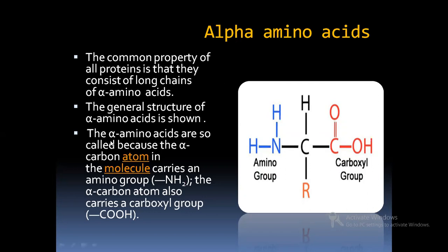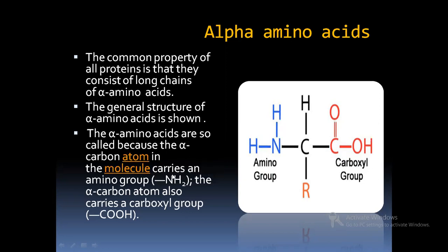We preferably call these acids as alpha amino acids because in this structure you have a carbon which is attached to an amino group and also to a carboxyl group. There is only one carbon atom, so this carbon becomes the alpha carbon, attached to both the amino group and the carboxyl group. The R group indicates the presence of a functional group or side chain.